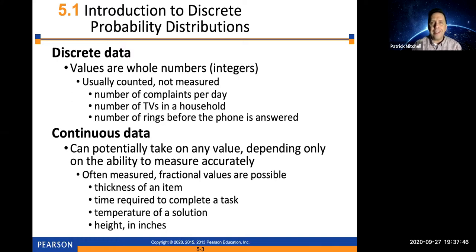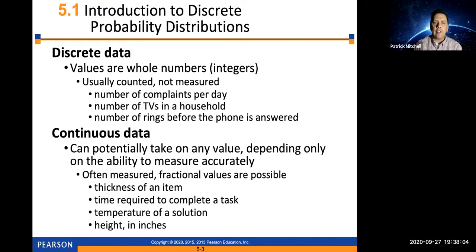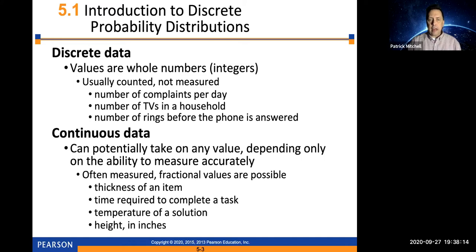Continuous data, which we'll talk about starting in the next chapter, can potentially take on any value depending only on the ability to measure accurately. Continuous data often answers the question 'how much,' and these are often measured. Fractional or decimal values are possible, such as the thickness of an item, the time required to complete a task, the temperature of a solution, or height in inches.